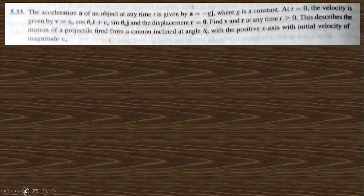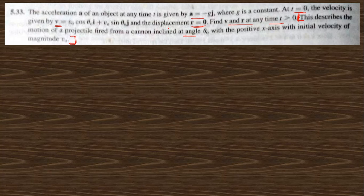Question 5.33: The acceleration a of an object is given by a = −g j-cap, where g is a constant. At t equal to 0, the velocity is given by v = v₀ cos θ₀ i-cap + v₀ sin θ₀ j-cap, and displacement equals 0 at t equal to 0. Find v and r. This describes projectile motion fired from a cannon inclined at angle θ₀ with the positive axis — this is the physical context for this type of equation.